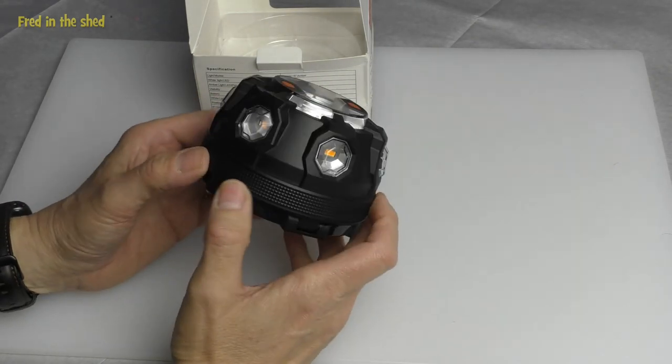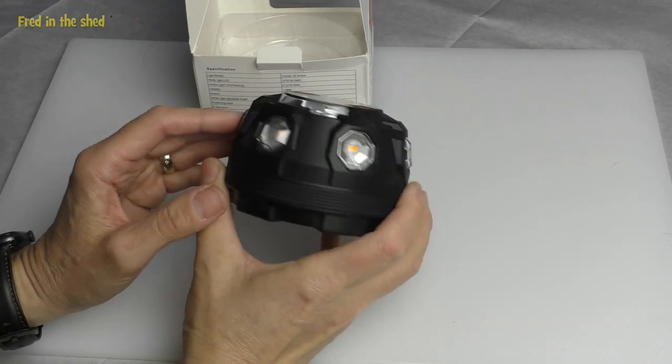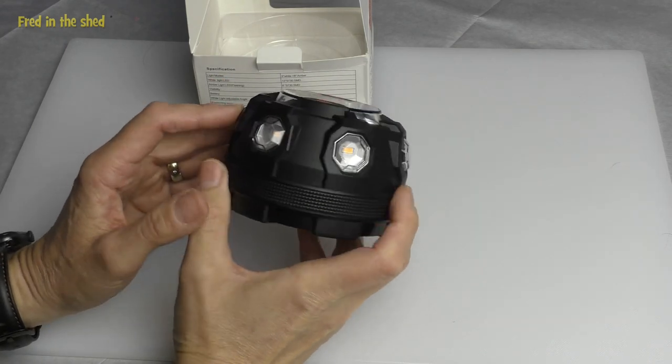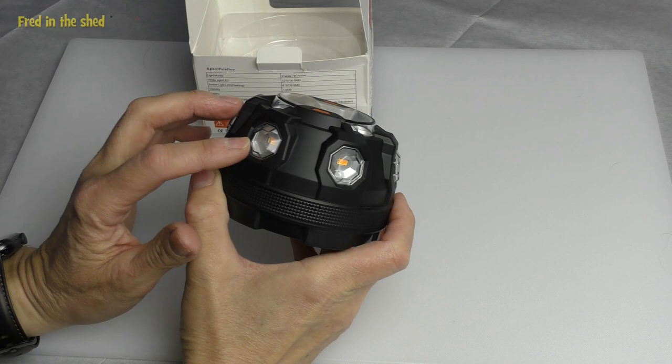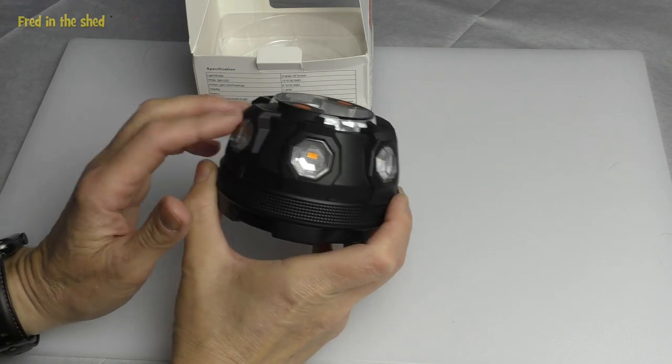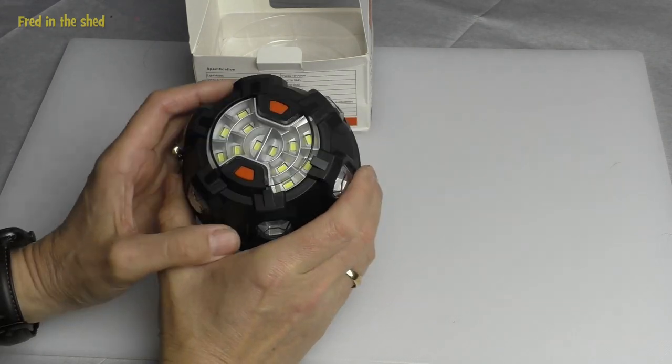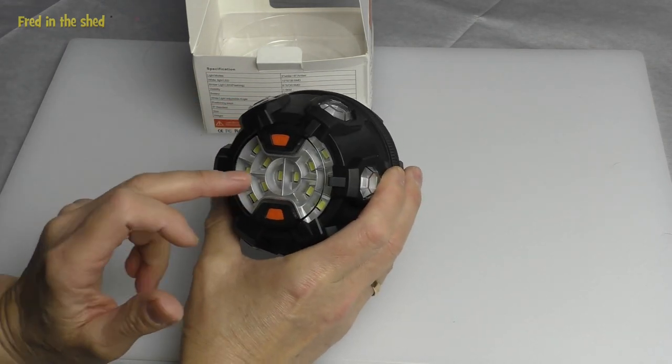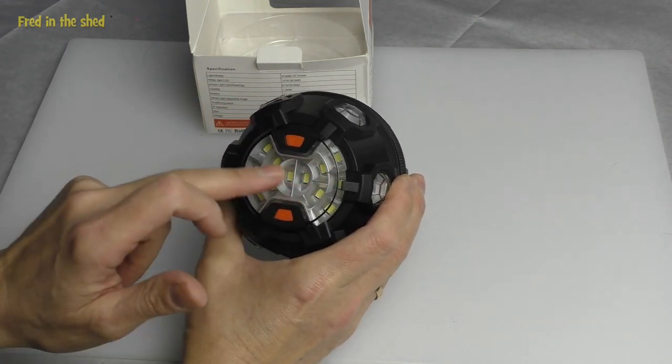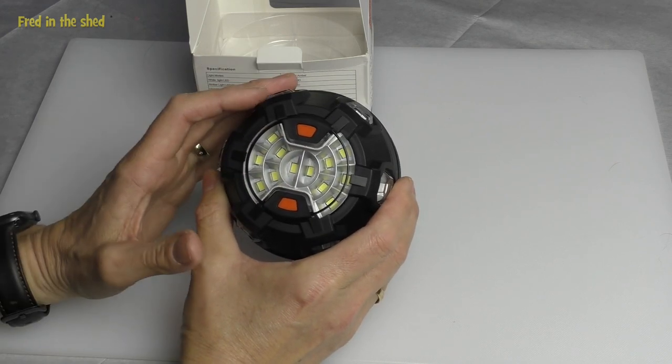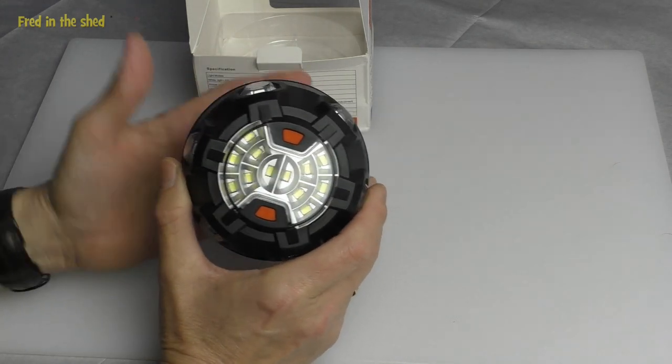So as we look around the unit, going around the outside of the unit here, we have six SMD LED lights, and these can flash in eight different modes, which I will demonstrate in a moment. And then on top of the unit, which is quite a good feature, we have 12 SMD white lights.